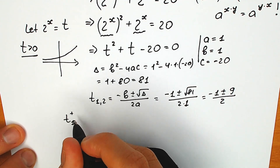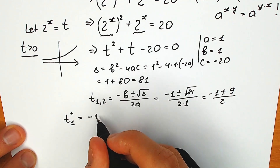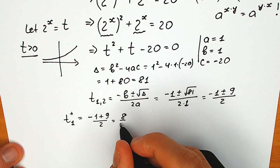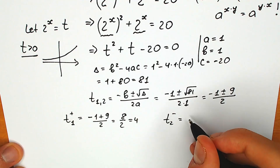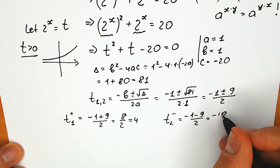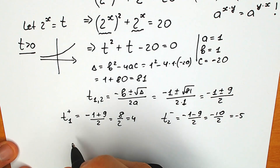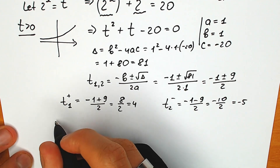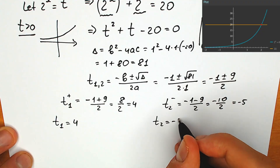For the first root, with the positive sign: t₁ equals minus 1 plus 9 over 2, which equals 8 over 2, which equals 4. And t₂ with the negative sign: minus 1 minus 9 over 2 equals minus 10 over 2, which equals minus 5. So t₁ equals 4 and t₂ equals minus 5.